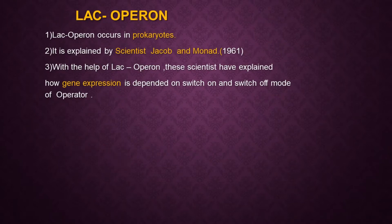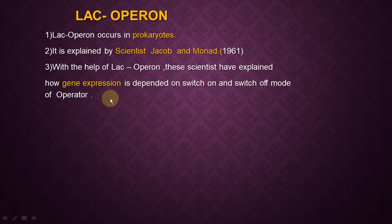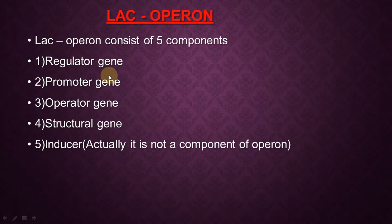Now let's start with a new topic: Lac Operon. It is a very interesting and very important topic. Lac Operon occurs in prokaryotes only. It was explained by two scientists, Jacob and Monod, in the year 1961. With the help of this Lac Operon, these scientists explained how gene expression depends on the switch-on and switch-off mode of the operator.